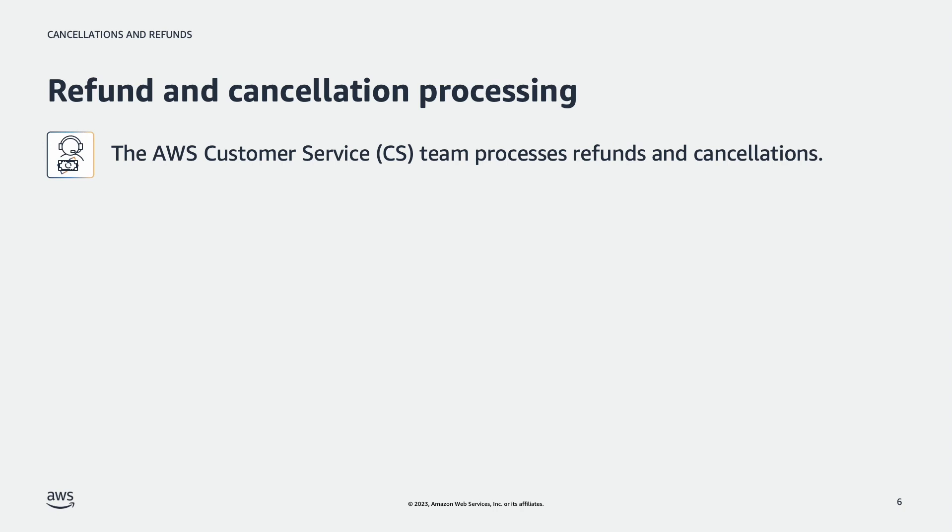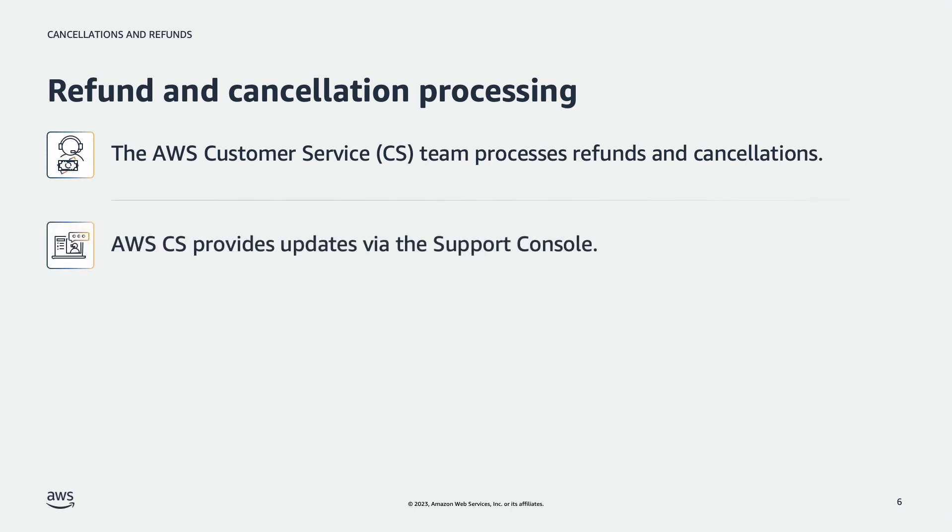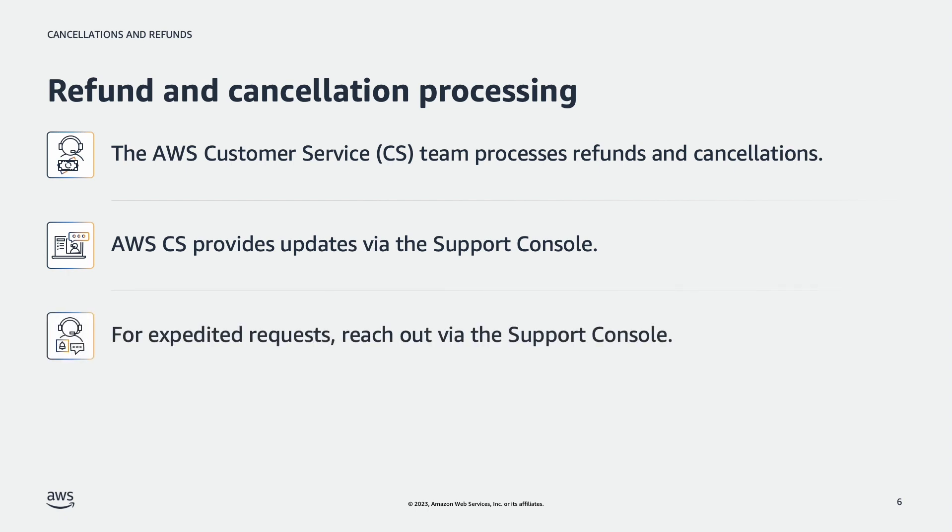The AWS customer service team processes refunds and cancellations. Once the refund is processed, they will provide an update via a case on the support console to both the seller and buyer. The seller and buyer will also receive email notifications to the root email associated with their respective accounts. Additionally, if the AWS customer service team has further questions regarding the refund, they will reach out to the seller via the support console. As best practice, we recommend sellers inform buyers that they will be contacted by AWS via the support console for cancellation confirmations. If a seller requires a certain refund and/or contract cancellation request expedited, we recommend the seller reach out to the AWS customer service team via the support console.